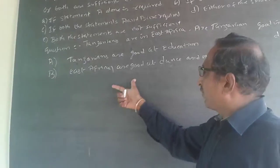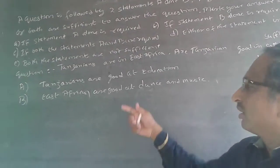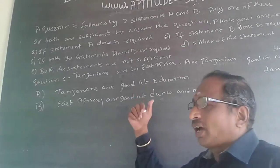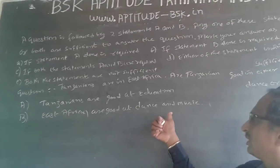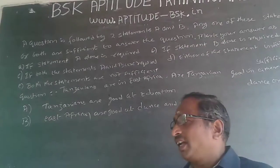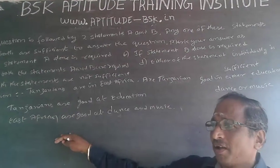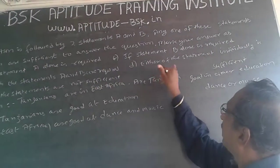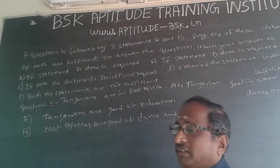The second statement says East Africans are good in dancing and music. Since Tanzanians are East Africans, ultimately Tanzanians are also good in dancing and music. Many students give the answer as A or as B, and very rarely do they give the answer as D — that either statement is individually sufficient. But all three of these answers are wrong.